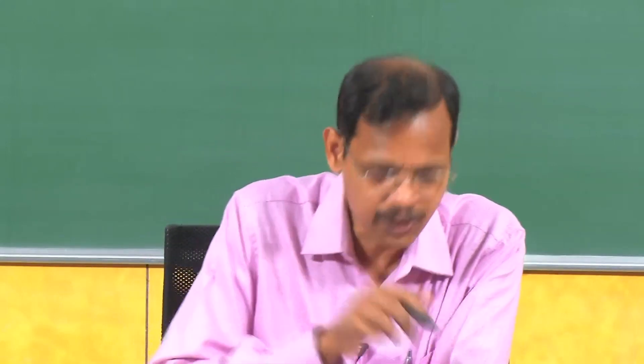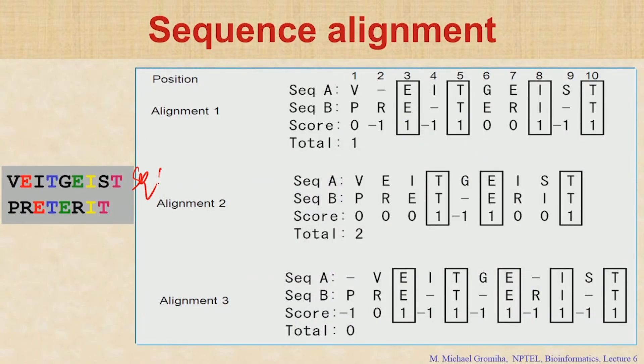Here we have the protein sequence. I give the DNA sequence and another protein sequence. This is sequence A, here sequence B. There are different ways we can align the two sequences. In the first one, I put some gaps in sequence A and sequence B. In the second alignment there is no gap in sequence A, but some gaps in sequence B, and in the third one we introduce gaps.